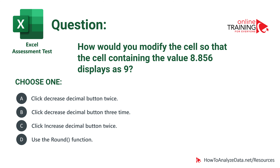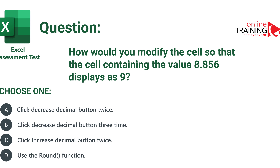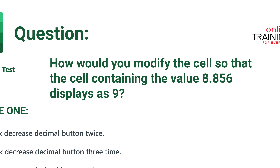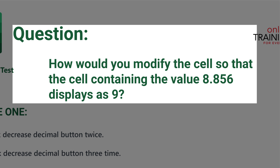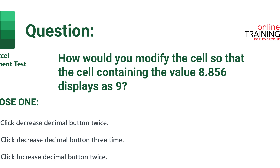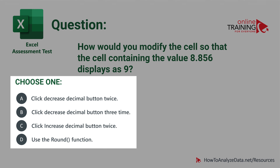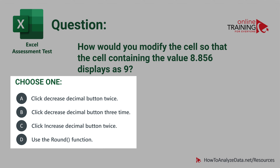Let's look at an Excel test question frequently used on LinkedIn, Indeed.com, or other assessments — one that tests your knowledge of number formatting. How would you modify the cell so that the cell containing the value 8.856 displays as 9? There are four choices: click the decrease decimal button twice, click it three times, click the increase decimal button twice, or use the ROUND function.